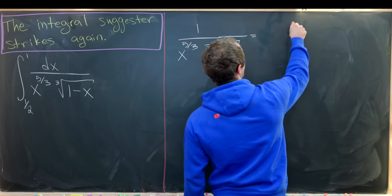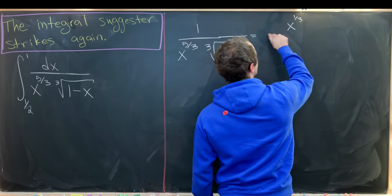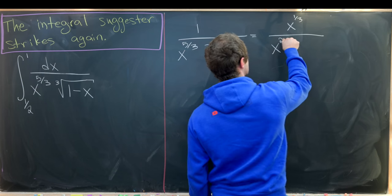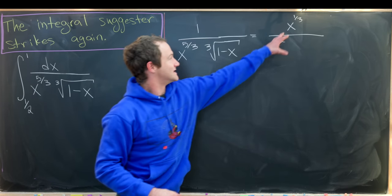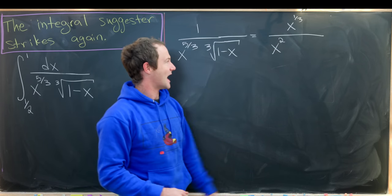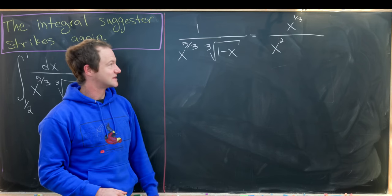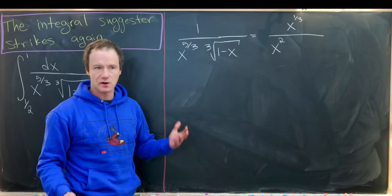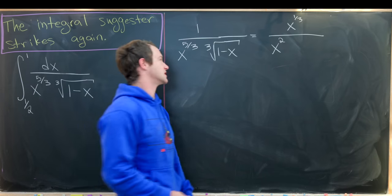So I'm going to first rewrite that as x to the 1 third over x squared. So notice that will give us our x to the 5 thirds in the denominator. Given the fact that 2 is the same thing as 6 over 3 and 6 over 3 minus 1 over 3 is 5 over 3.